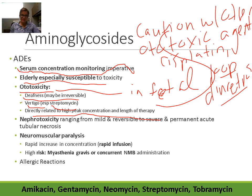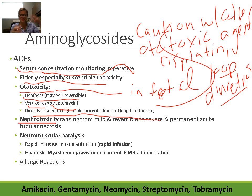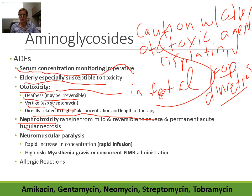Aminoglycosides also have nephrotoxicity risk. Since over 90% is excreted unchanged into the urine, there's a very high concentration in the kidneys. Nephrotoxicity can range from mild and reversible — a slight increase in serum creatinine that resolves — all the way to severe, permanent acute tubular necrosis. This wide range of severity requires close monitoring.